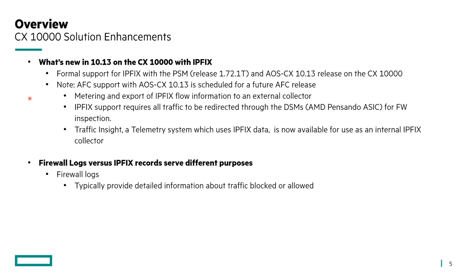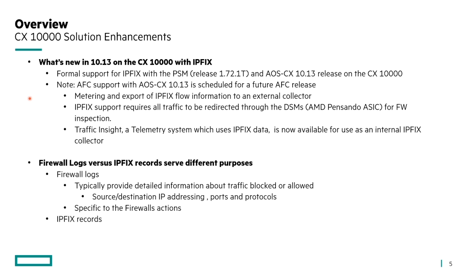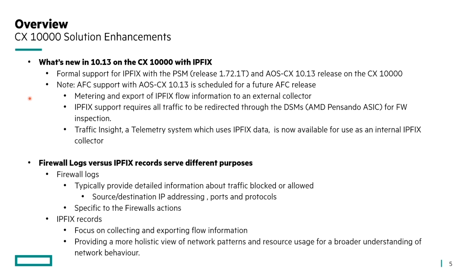Firewall logs and IP fix records serve different purposes and can co-exist, complementing each other. Firewall logs provide detailed information about traffic blocked or allowed as flows traverse the firewall — based on source/destination IP addressing, ports, and protocols — and are specific to firewall actions. IP fix records, however, focus on collecting and exporting flow information, providing a more holistic view of network patterns and resource usage for broader understanding and richer insight into network behavior.